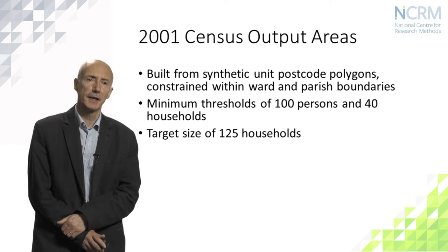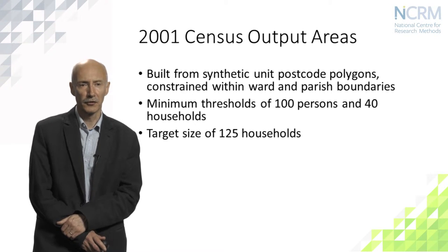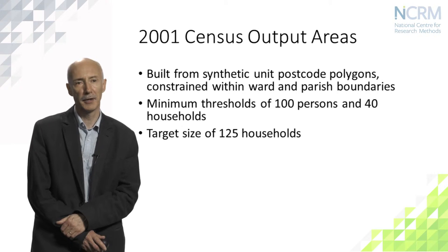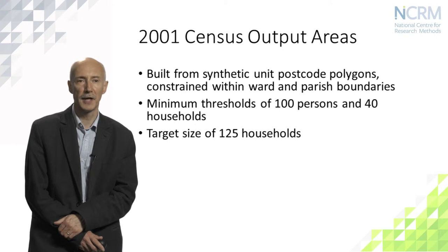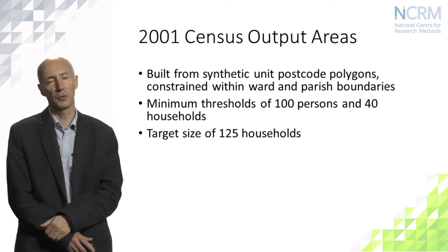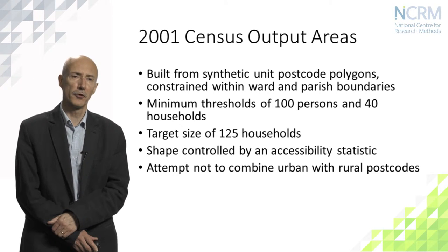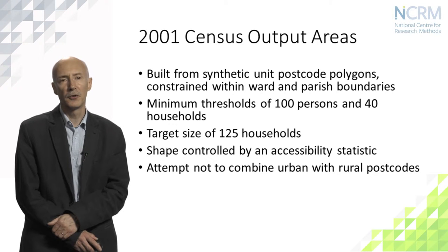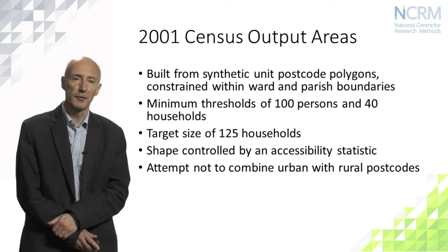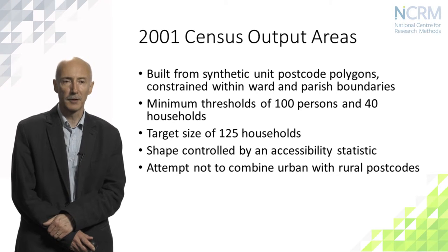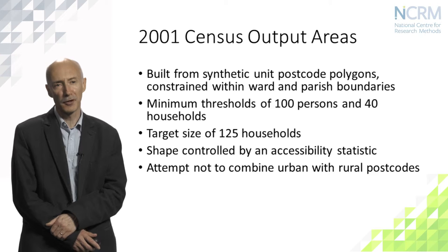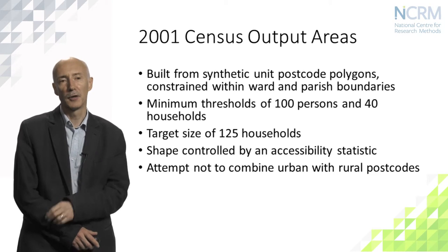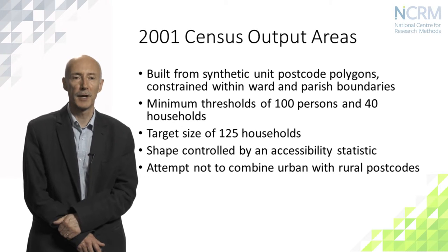The 2001 census output areas were built from synthetic postcode polygons and were constrained within ward and parish boundaries present at the time. They had a minimum population threshold of 100 people and 40 households, and a target size of 125 households. The shape was controlled using an accessibility statistic which was intended to keep settlements together, such that in rural areas a single settlement wouldn't be split across different large areas of low density land, but rather zones would be kept tightly packed around small settlements where possible.